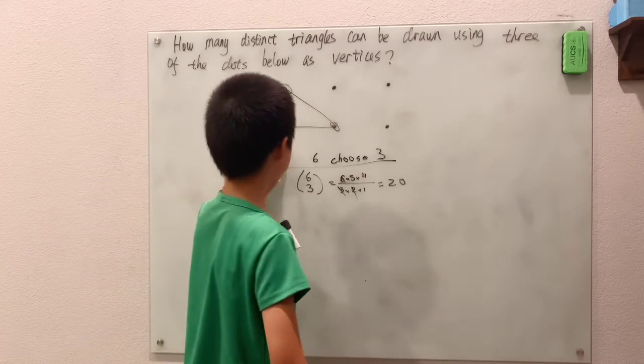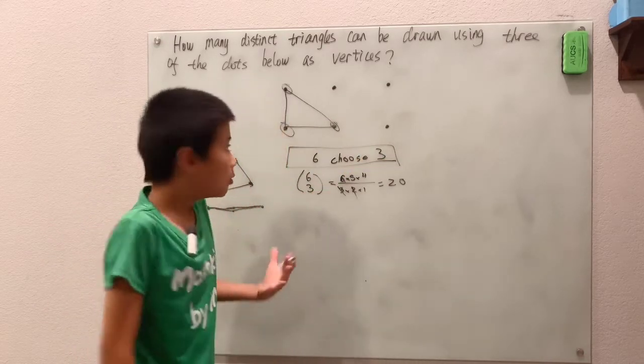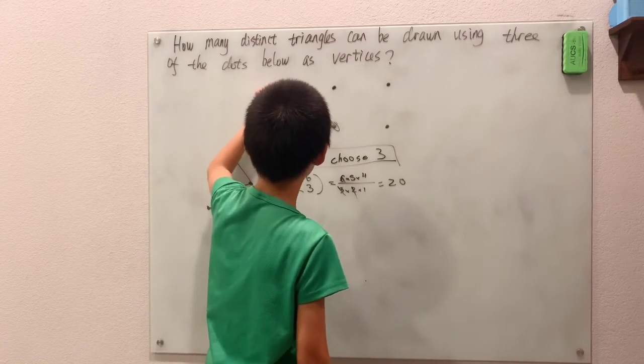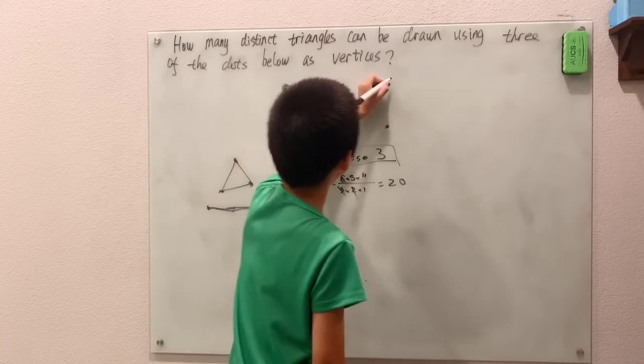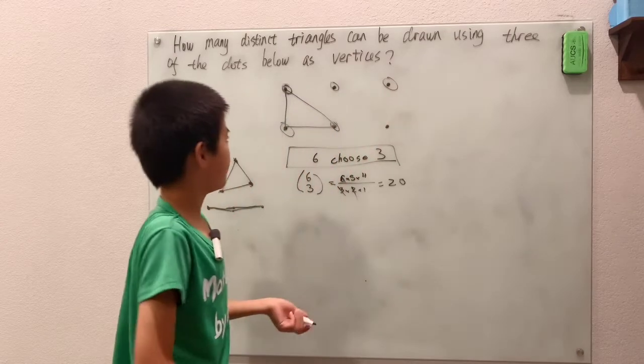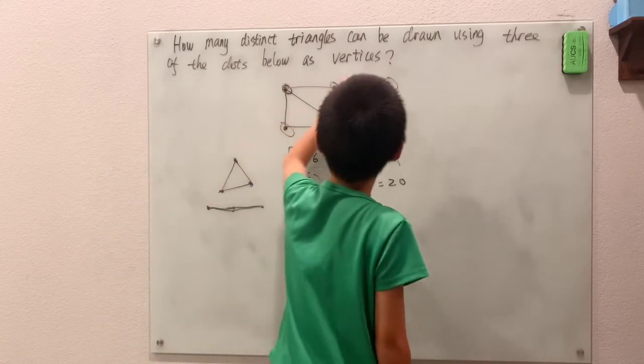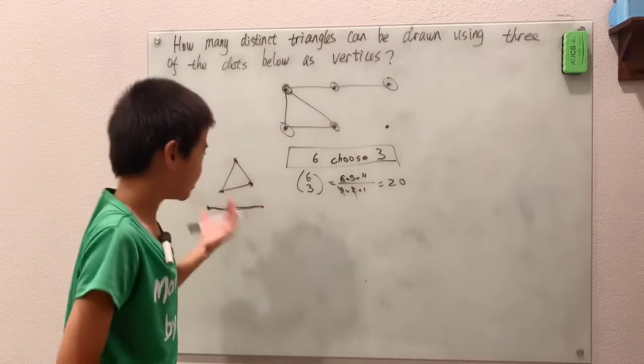So in this six choose three, we're basically counting choosing this dot, this dot, and this dot as one of our triangles. But again, that line isn't a triangle.